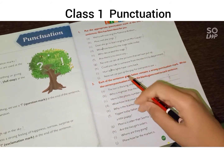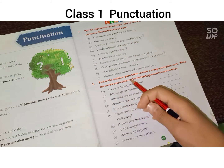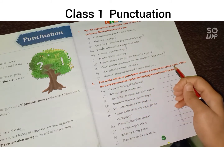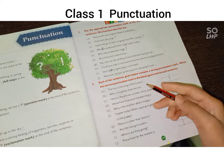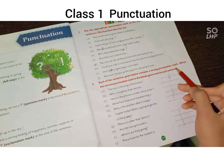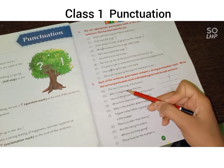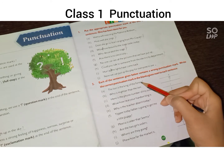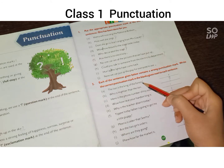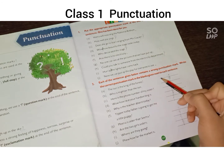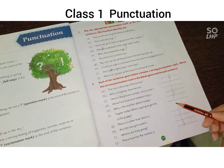Next question: each of the sentences given below contains a wrong punctuation mark. Write the correct punctuation mark in the blank given next to each sentence. यहां पर क्या किया गया है कि हर sentence के बाद में एक mark लगाया गया है लेकिन वो mark गलत है — उसे हमें सही करना है और जो सही करना है वो हमें यहां लिखना है।